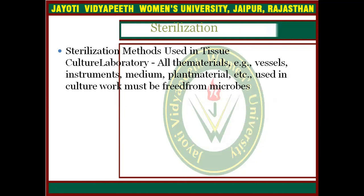Before proceeding with the experiment of plant tissue culture, we have to look at the sterilization process. Sterilization is used in the tissue culture laboratory for all the materials required — vessels, instruments like autoclave, oven, media, and plant material — and everything used in culture work must be free from bacteria or fungus.